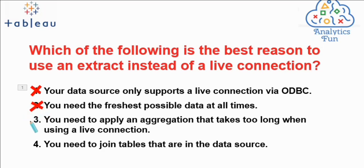Option three: you need to apply an aggregation that takes too long when using a live connection. We know that in extract connection, we have aggregation capabilities, and that's why its performance is quite high — because you can aggregate the data and reduce the number of rows significantly, from order date level to month level, for example. That's why you should prefer extract connection, because it reduces the rows and will provide better performance. So this option is correct.